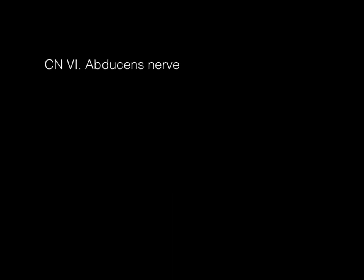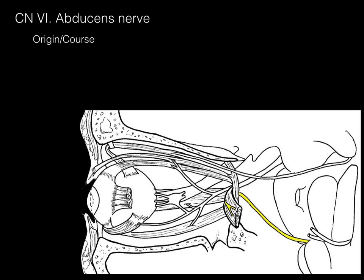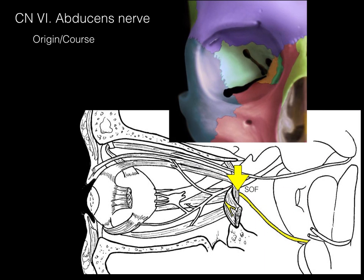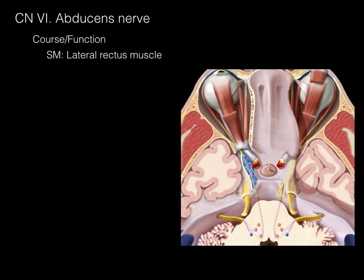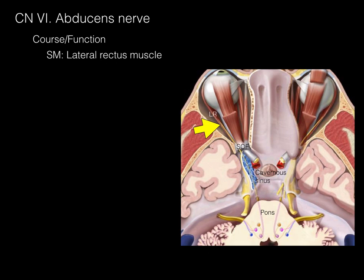The abducens nerve, cranial nerve 6, has the following origin and course: it arises from the pons and courses to the superior orbital fissure, where it innervates the lateral rectus — just one muscle. The abducens nerve courses from the pons through the cavernous sinus to the superior orbital fissure, and then to the lateral rectus muscle.